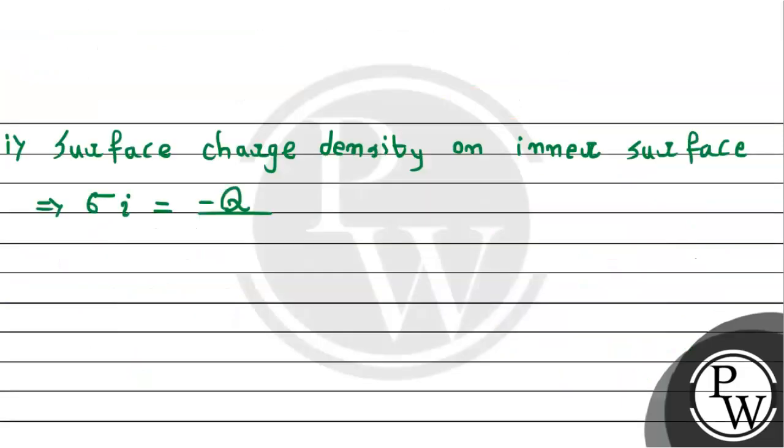So now by using the formula of surface charge density for the first, the inner surface charge density on inner surface, this can be given as sigma i, which will be equal to negative Q. Because this is a spherical form, the area is 4 pi r square. So the inner surface radius is R1, so divided by 4 pi R1 square.